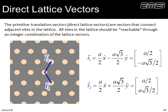First, we want the direct lattice vectors. Remember, the primitive translation vectors point to adjacent sites in the lattice. We would start here, call that our origin, and define two primitive translation vectors. We get this by working through the geometry: each angle of this equilateral triangle is 60 degrees and each side is A. We work through the geometry and figure out what these primitive translation vectors are. Those are the direct lattice vectors.